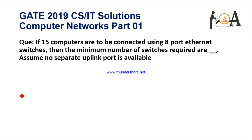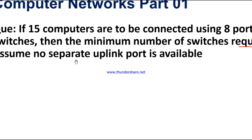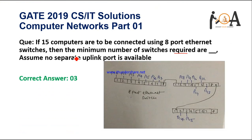The next question: if 15 computers are to be connected using 8-port Ethernet switches, what is the minimum number of switches required, assuming no separate uplink port is available? In the network design, the first switch connects 7 PCs using 7 ports and its 8th port connects to the next switch. The second switch connects 6 PCs and its last port connects to the third switch. The third switch connects the remaining 2 PCs. Therefore, a minimum of 3 switches is required.